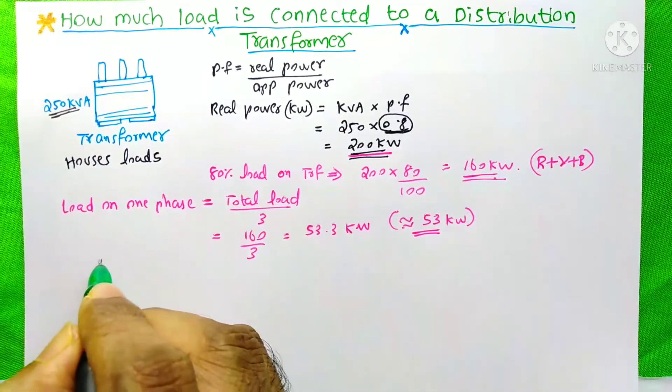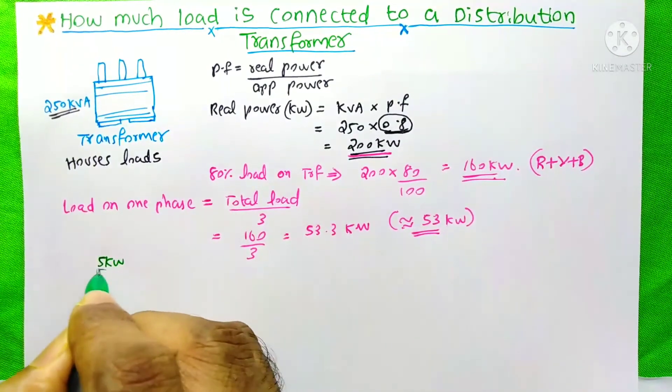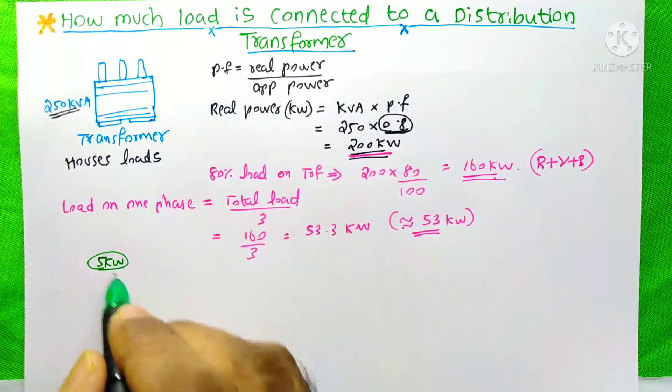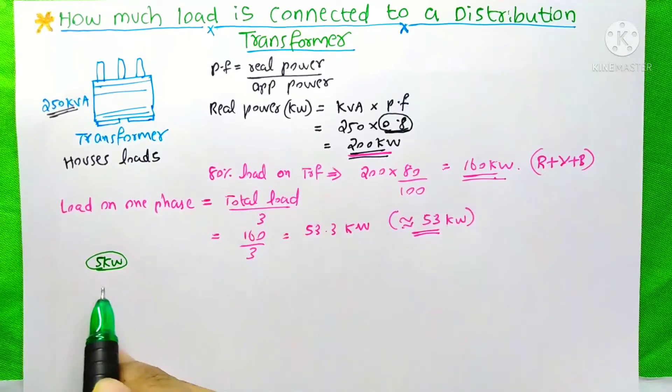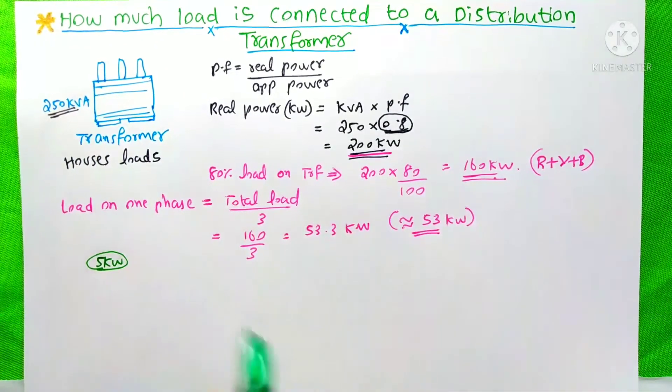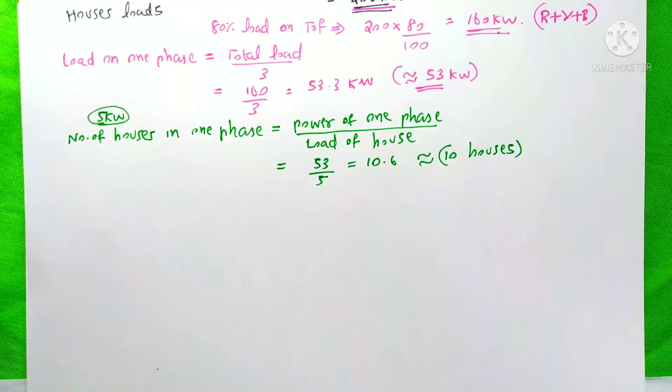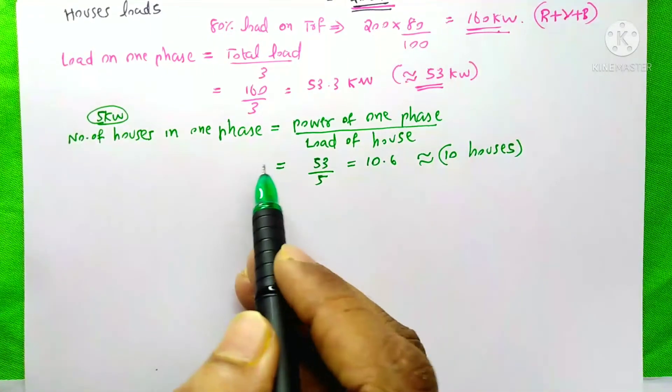Suppose each house's load is 5 kW. We need to find how many houses we can connect to a single phase. For that, first we need to find the number of houses in one phase.